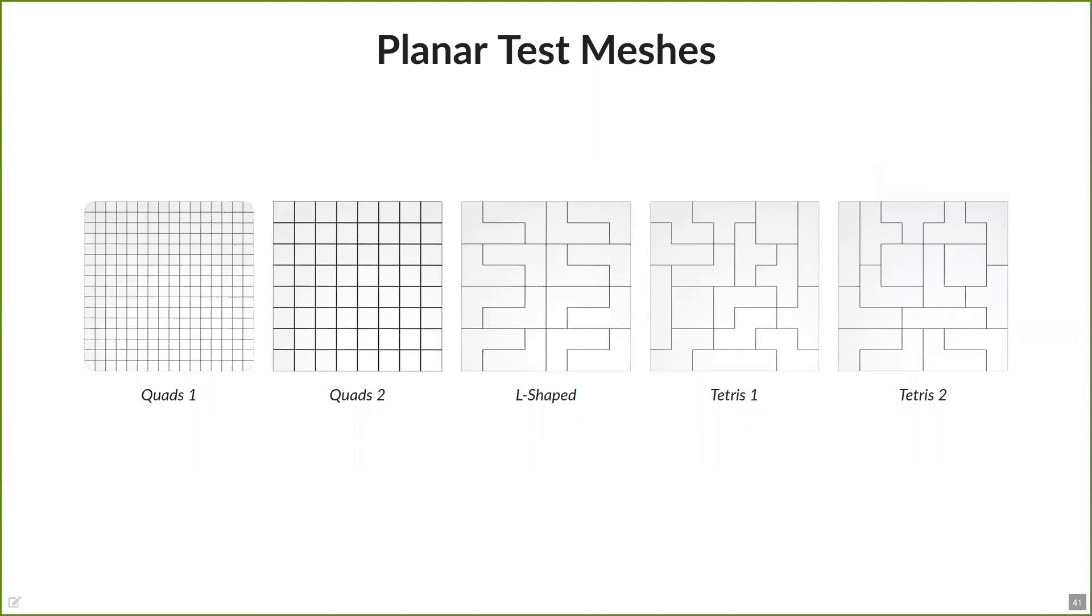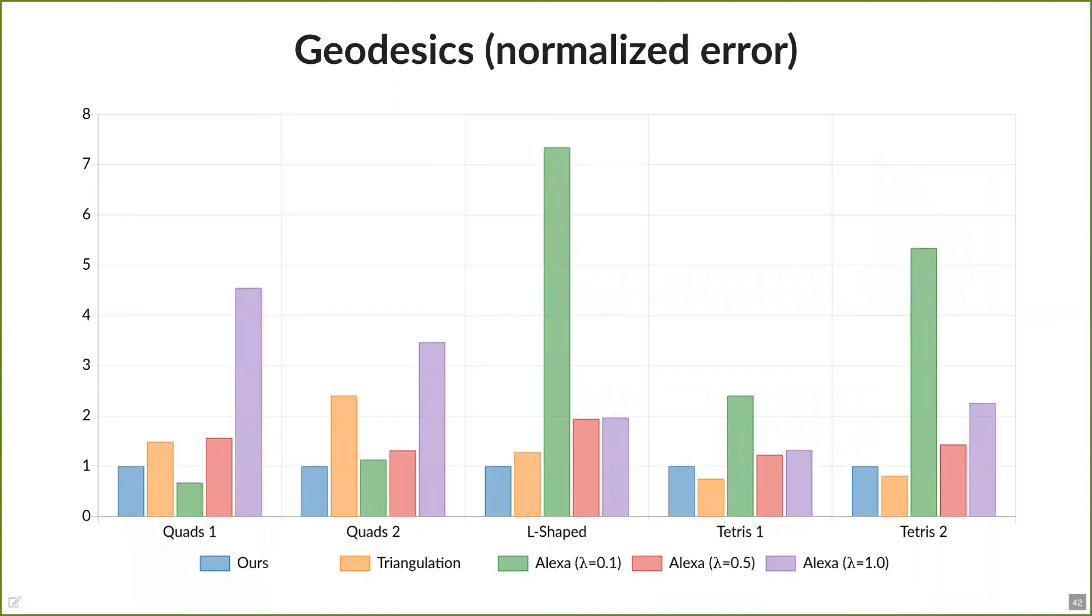To compare our quantitative performance, we tested the geodesic distances on different planes, since we are able to compare them to the Euclidean distances as the ground truth. And once again, on most of the meshes, our operator is able to yield the smallest errors. And in general, it is able to outperform Alexa's Laplacian. And as mentioned before, this does not change with the usage of a higher time step.